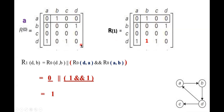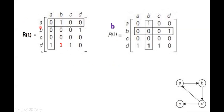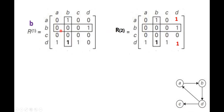Now we have R^1. We proceed to stage 2 by considering b as the intermediate vertex. We freeze the row and column of b — these values remain unchanged. All previous matrices are forgotten; only R^1 is the reference matrix from which we derive R^2.